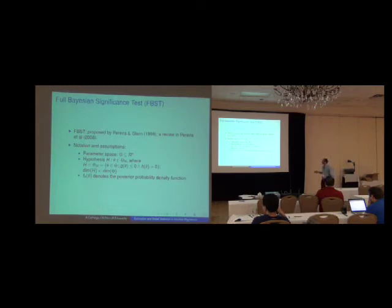We consider that the parameter space is a subset of R^N and the hypothesis is defined by a set of constraints of inequality and equality constraints. And the particular interest is on sharp hypothesis, where the dimension of the hypothesis is smaller than the complete parameter space.